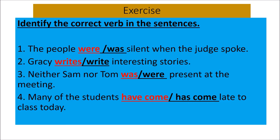The second one is Gracie. Gracie is a singular name — singular third person. That's why we add S to the verb 'write,' making it 'writes.' So: 'Gracie writes interesting stories.' If in place of Gracie it were 'I,' then it would be 'I write interesting stories.'